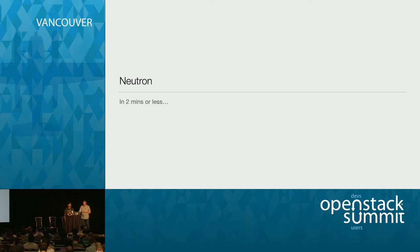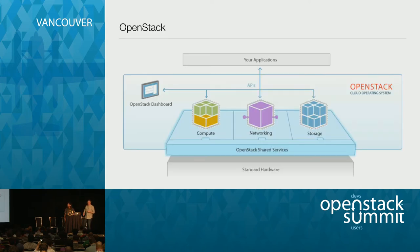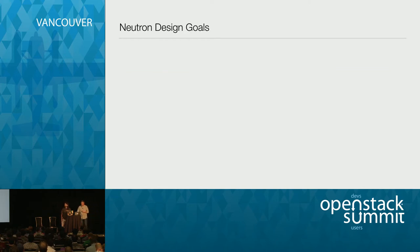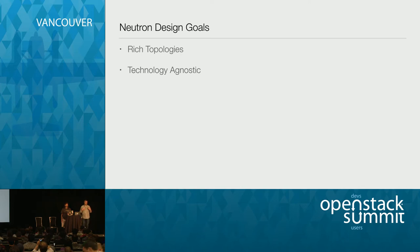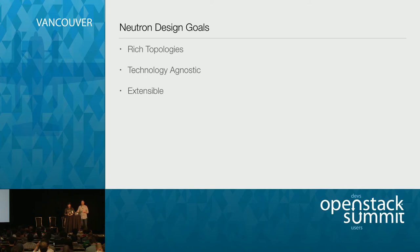Neutron in two minutes or less. It's an OpenStack talk - compute, networking, and storage. Networking binds the pieces together. Neutron's design goals are the ability to create rich topologies, be technology agnostic - allowing multiple L2 backends and multiple implementations for layer three through seven services - and be extensible so new technologies can be supported. Hierarchical port binding is one such extension. It also supports advanced services like load balancing, VPN, and firewall.